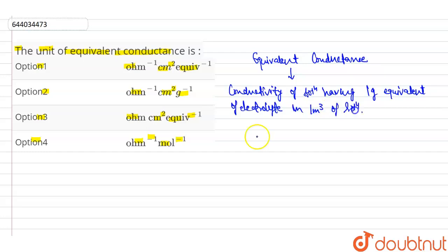Now we can write the equivalent conductance is equal to conductivity upon normality, because equivalent weight is related with normality into thousand. Now firstly, we know about the unit of conductivity.